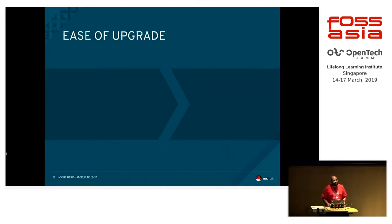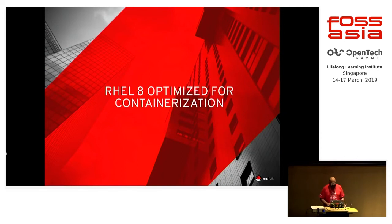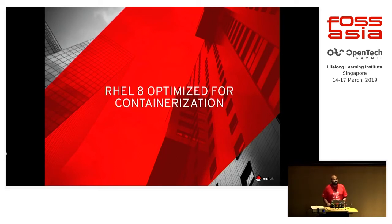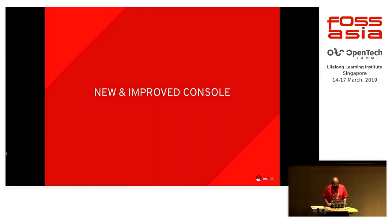Ease of upgrade. Our prime objective in the next version of OpenShift is ease of upgrade and installation. Earlier we had the blue-green installation method. Ease of upgrade is the core value for our next iteration. RHEL 8 is also optimized for containerization just like CoreOS, so in the near future if you like to use RHEL 8 you can also use it with OpenShift. Faster deployments is the core value for our next iteration, along with a new and improved console, which I am going to show you in just a minute.